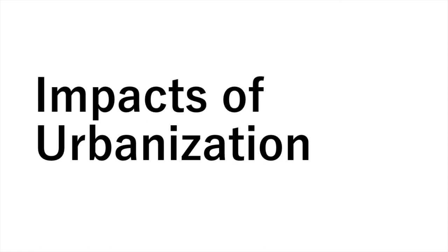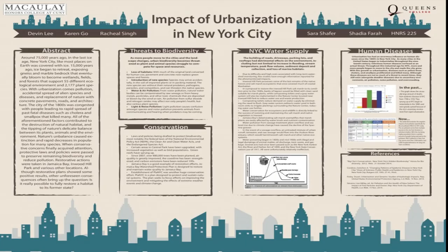Now we're going to look at the impacts of urbanization, or urban sprawl, using this graphic. As we grow, it impacts biodiversity — which makes sense because of habitat loss and increases in pollution. We also end up affecting water supply because of groundwater infiltration, and we cover up a lot of areas with concrete that water could otherwise return to aquifers. It also examines human disease — in areas with higher population density, disease spreads more quickly.